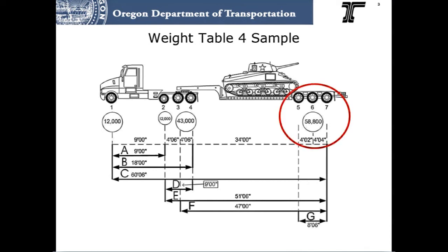One of the major differences between the two weight tables is on triple axle groups such as the trailer. In this case, 58,800 pounds is allowed on the triple axle group under Weight Table 4.